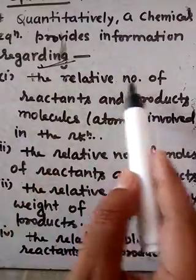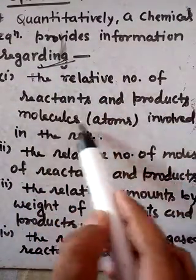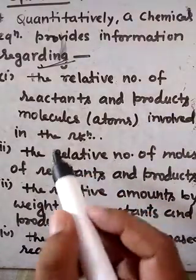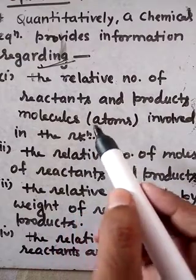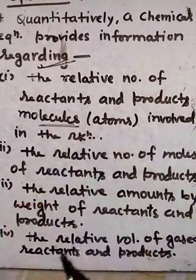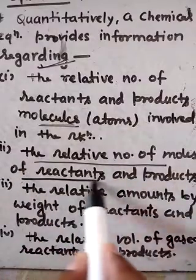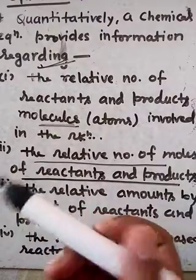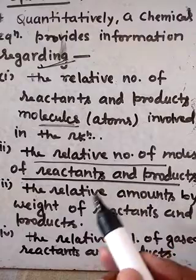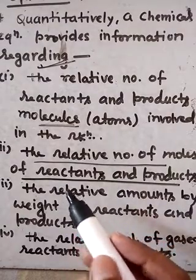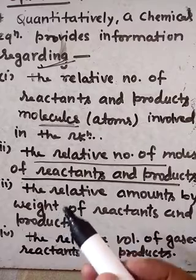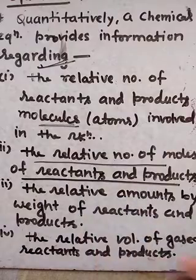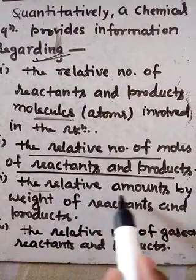So a chemical equation represents qualitatively the names of compounds present on the reactants and product sides. Quantitatively, a chemical equation provides information regarding the relative number of reactant and product molecules involved in the reaction — meaning how many molecules or atoms take part, and the relative number of moles of reactants and products.